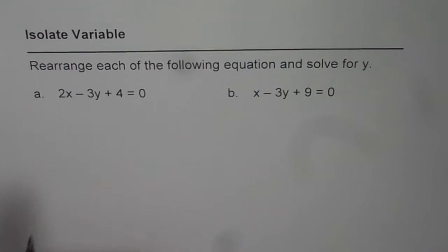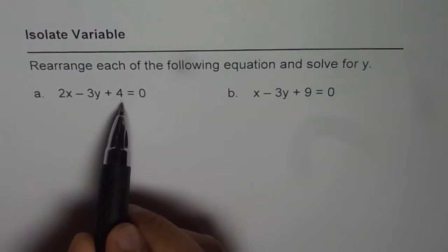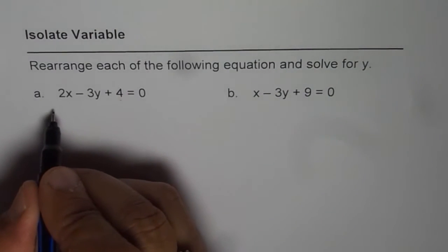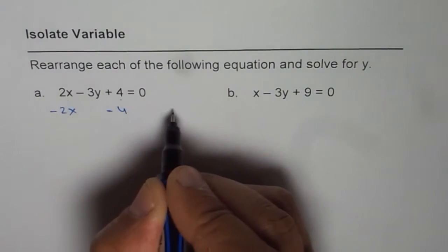Now to solve for y, we do not need 2x and 4 on the left side. So we will take them on the right side. One way to do that is in the equation, we can subtract 2x and minus 4 both sides.